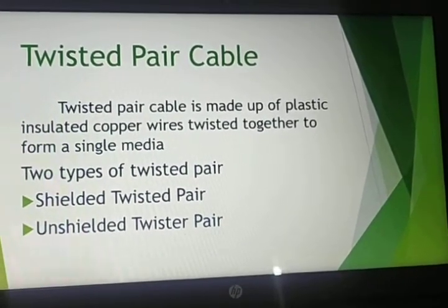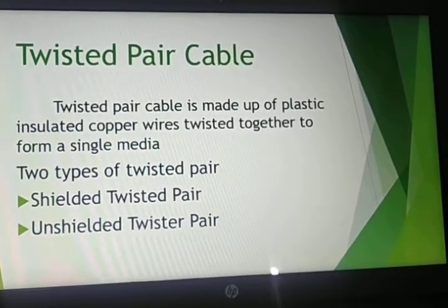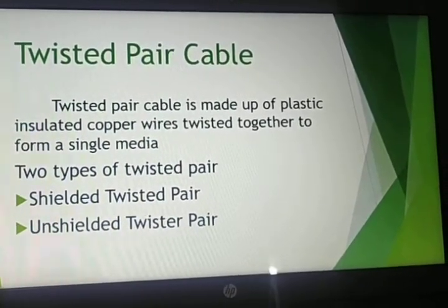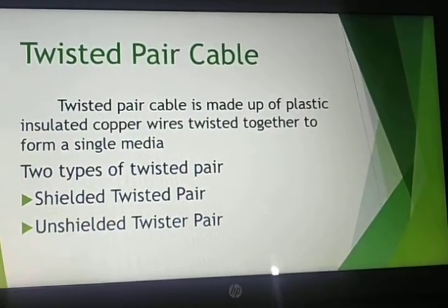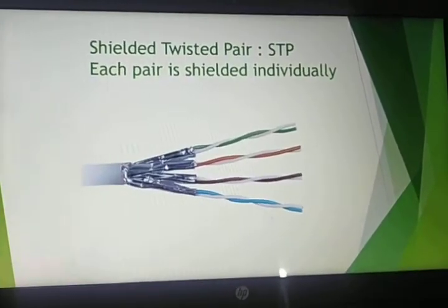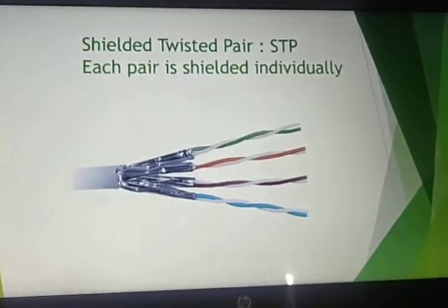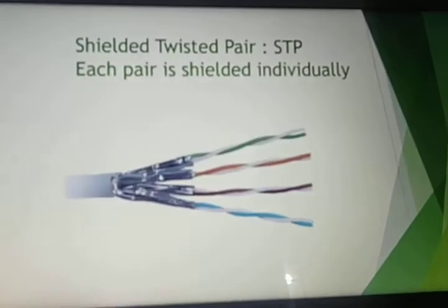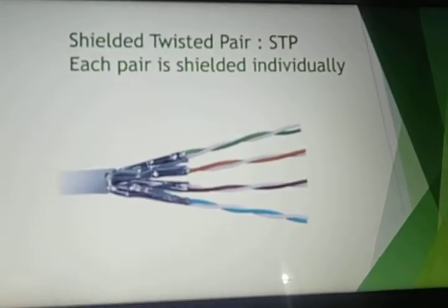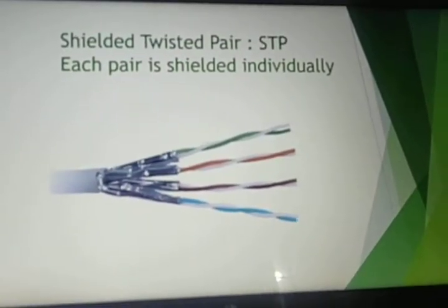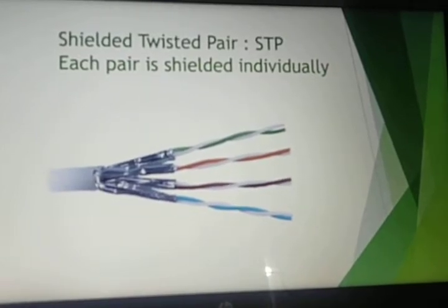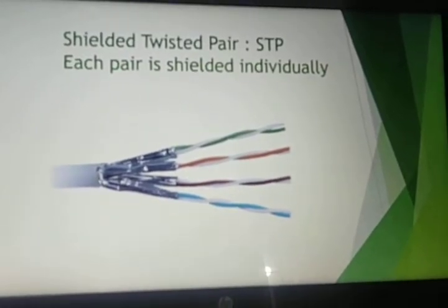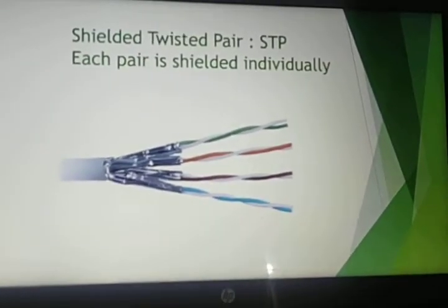There are two types of twisted pair cables: shielded twisted pair and unshielded twisted pair. Here comes the picture of shielded twisted pair. It is also known as STP, where each pair is shielded individually with aluminum foil.